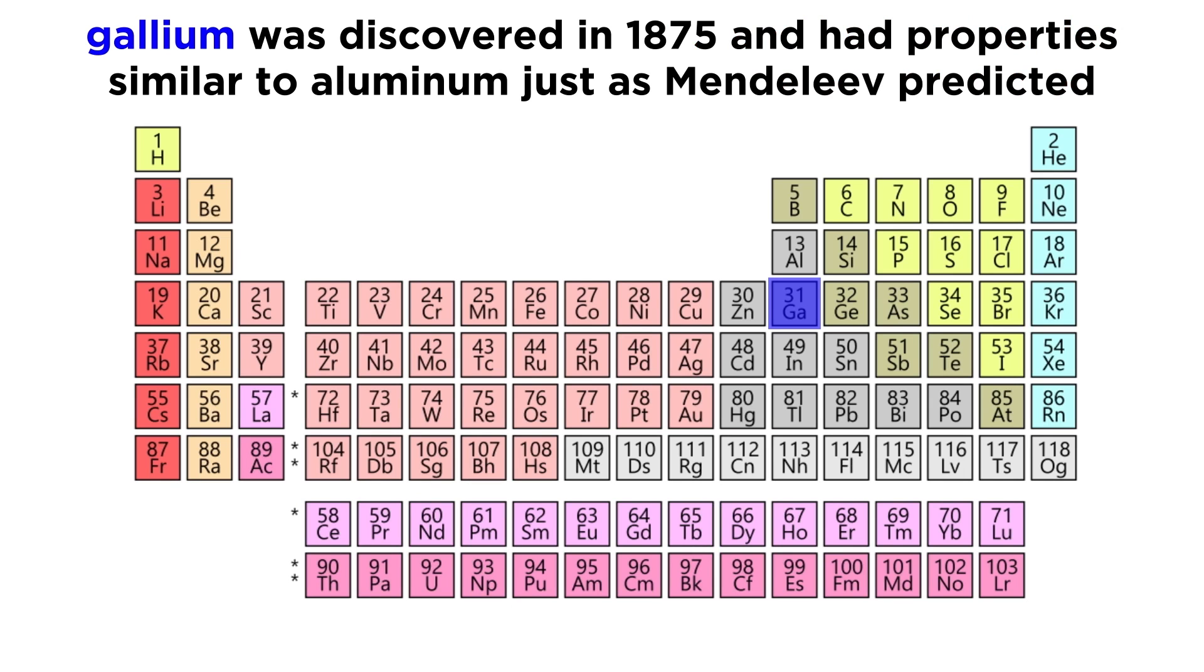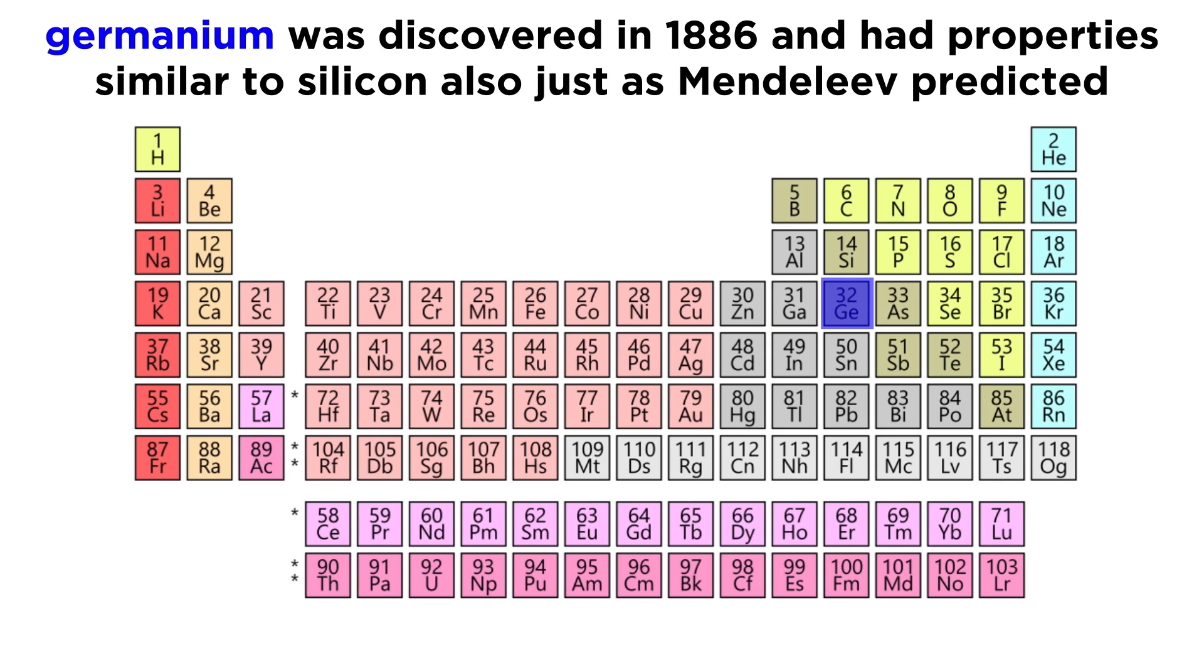Gallium was discovered in 1875, and was shown to have properties similar to aluminum, just as Mendeleev predicted on the basis that there was an empty spot under aluminum on his periodic table. Germanium, discovered in 1886, also matched the predictions of the table when it was found to have properties similar to silicon, which had an empty spot underneath it as well.